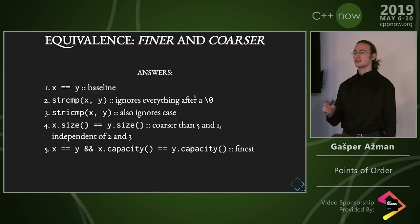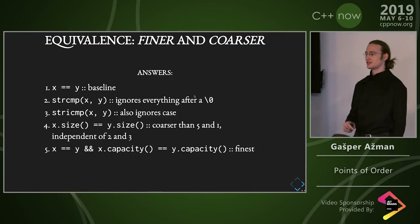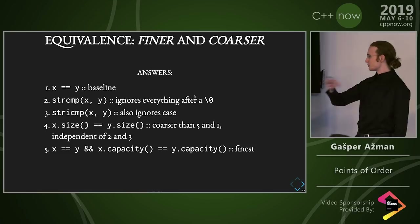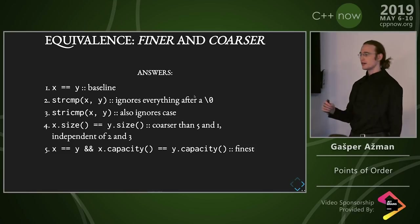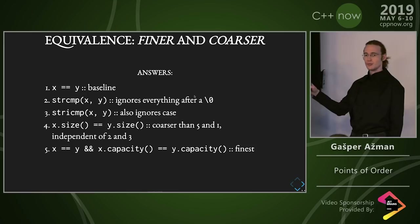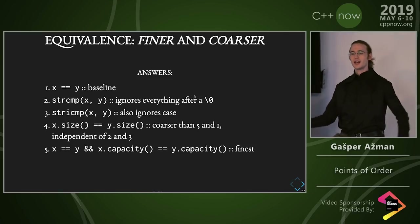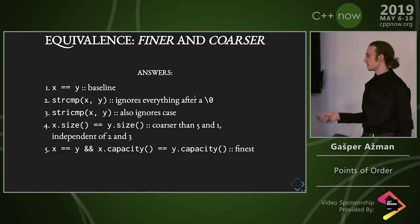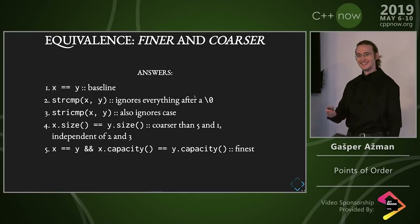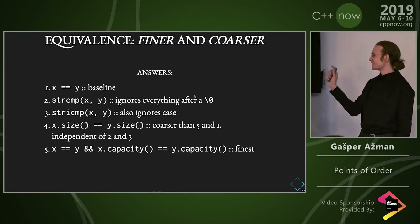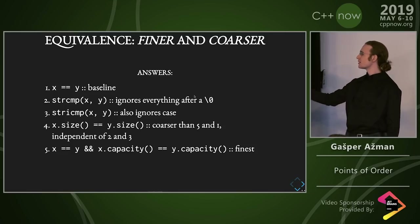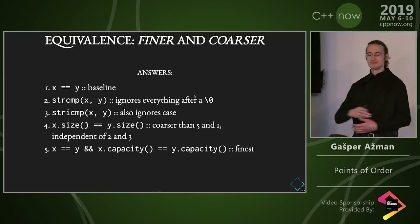Here's kind of the baseline: we've got the equality. That one is in fact the finest relation over your set — and that's what Arthur was referencing. strcmp also ignores case, so it's strictly coarser than the case-sensitive comparison. strcmp, in turn, is strictly coarser than number one. And you can see how these are transitive — that's why we get a lattice, because we also have the minimum element. And the thing that doesn't distinguish anything is the max element. Size is coarser than both five and one, but it's independent of two and three, because those have nothing to do with each other.